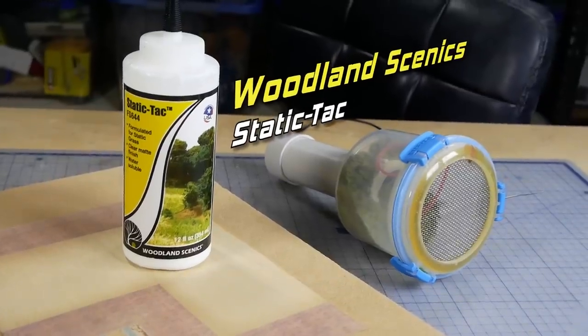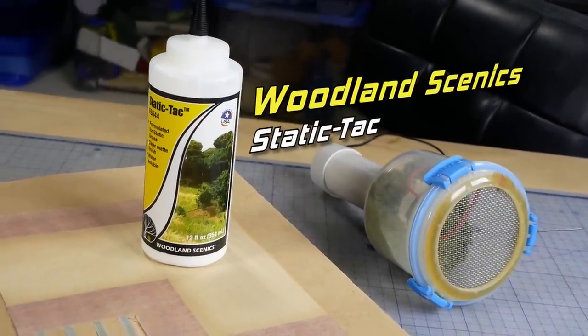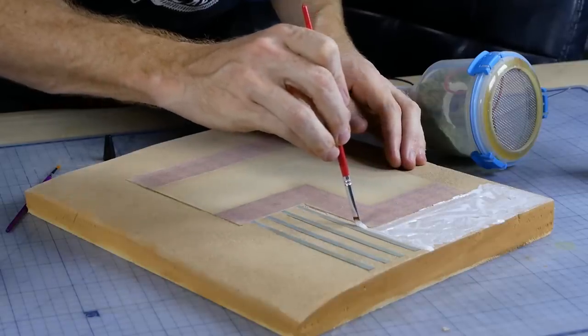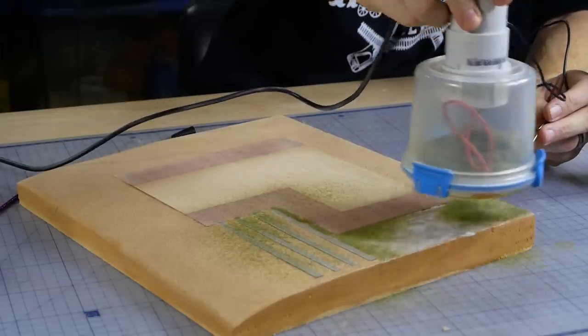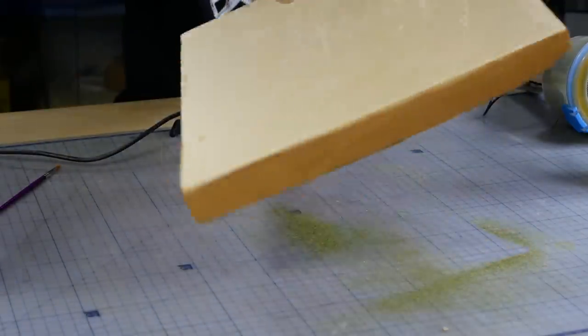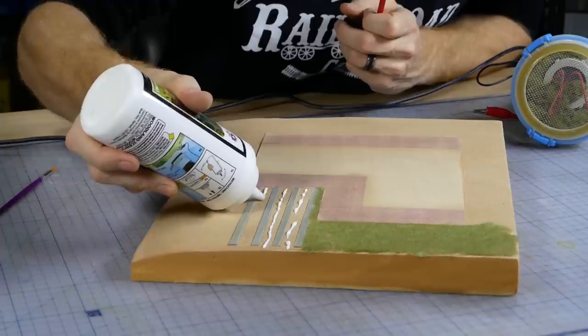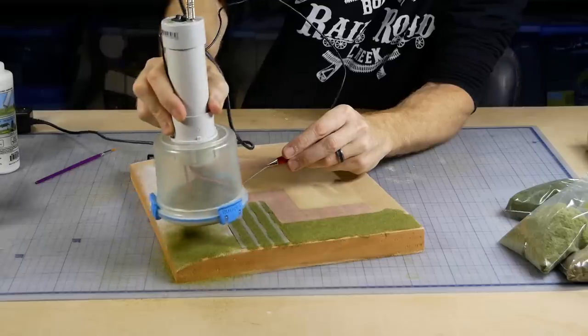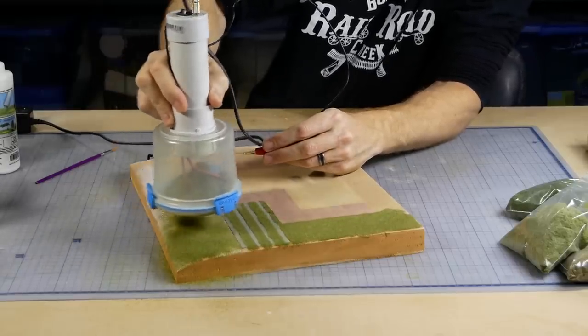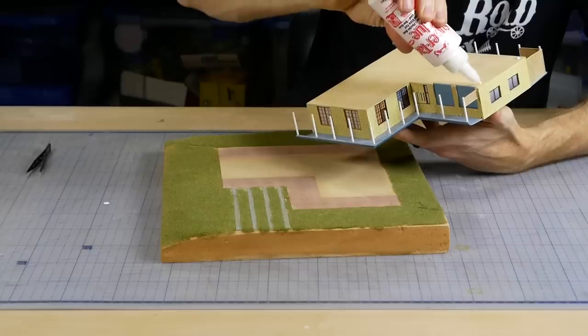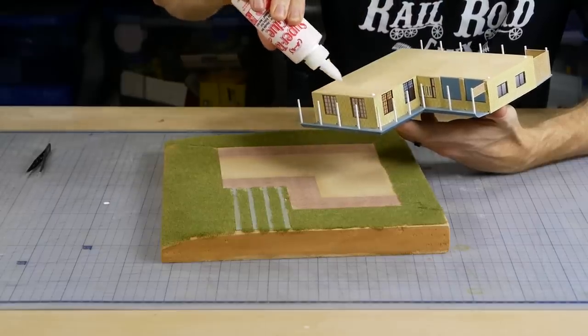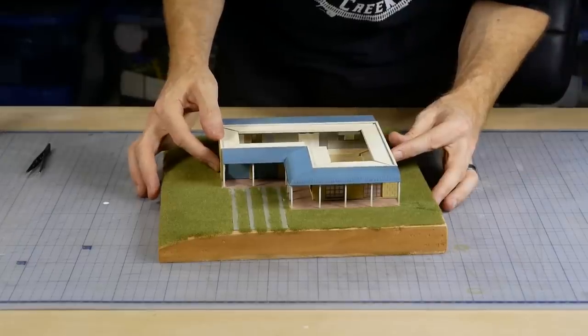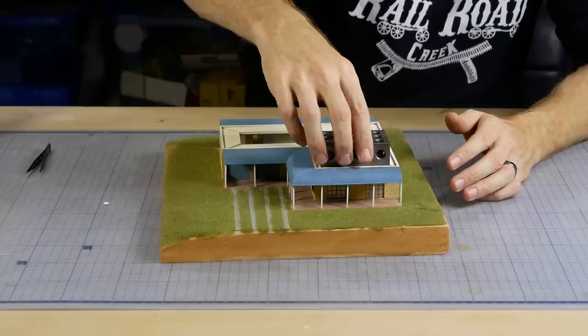With the static grass applicator ready to go, some Woodland Scenics Static Tack is used to glue the grass onto the diorama. It dries reasonably quick, so I only work in small sections at a time. I continue working around the model until I get the desired coverage. It always amazes me how much of a difference static grass makes to the look of a scene. Gluing the house down now helps me decide where the trees and bushes best fit into the scene. I try to avoid using too much glue when gluing the house, just in case at some point I want to remove it later to use on another diorama.